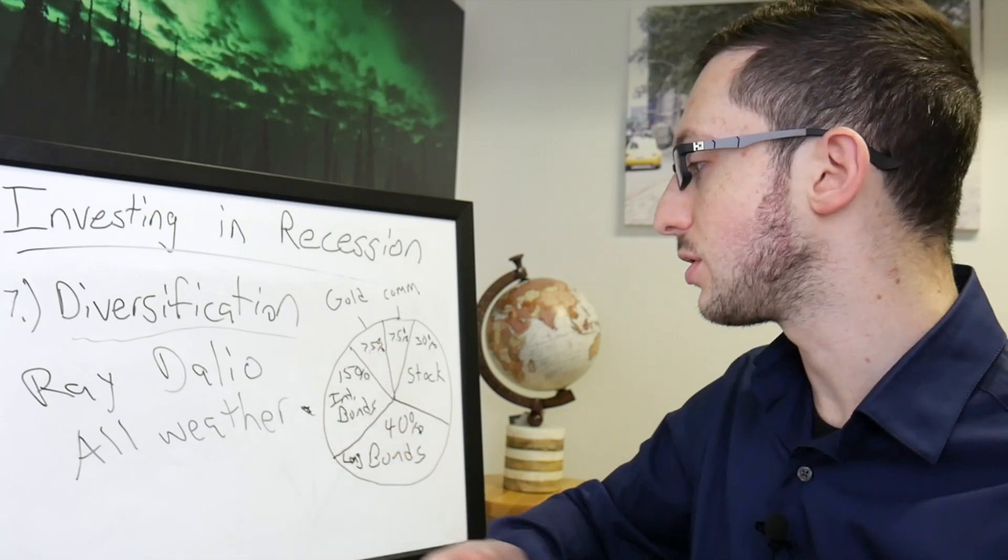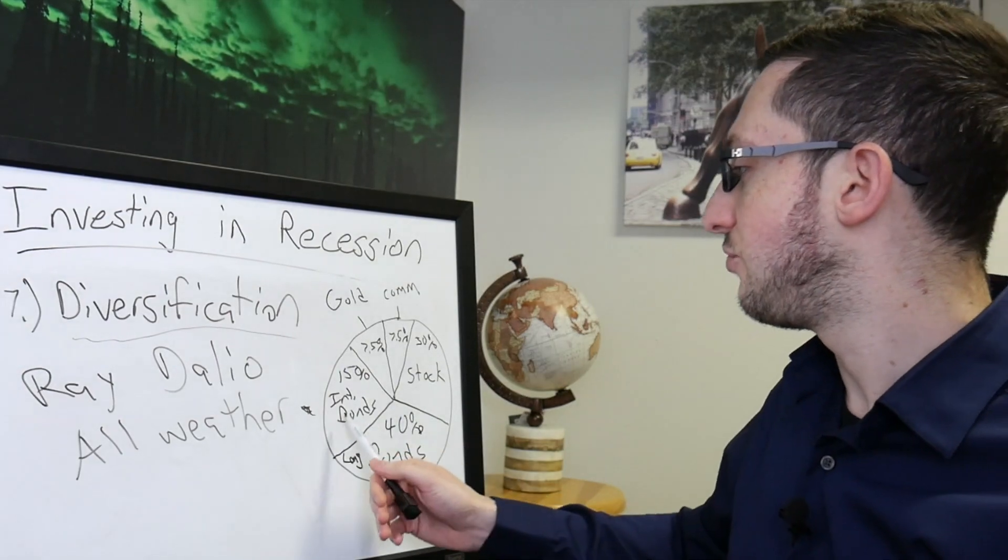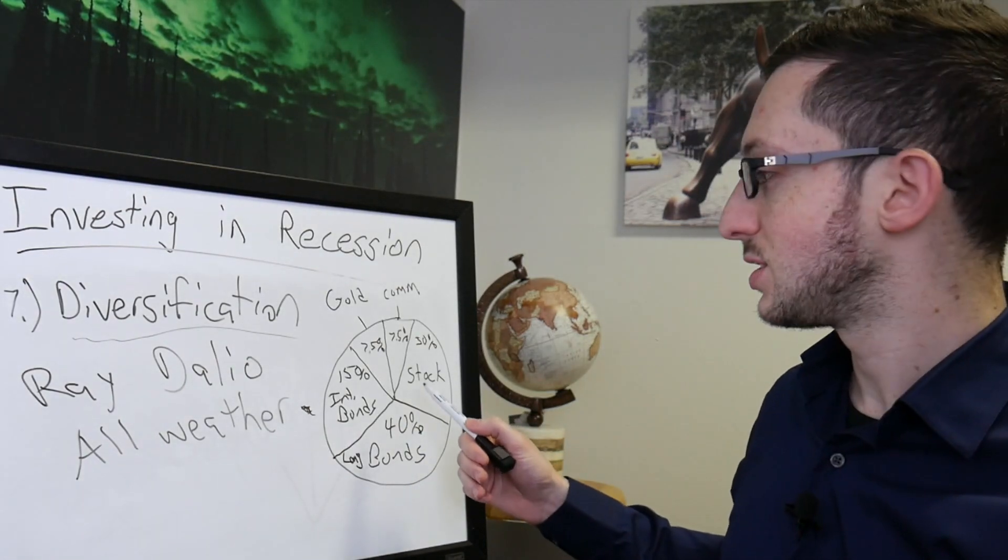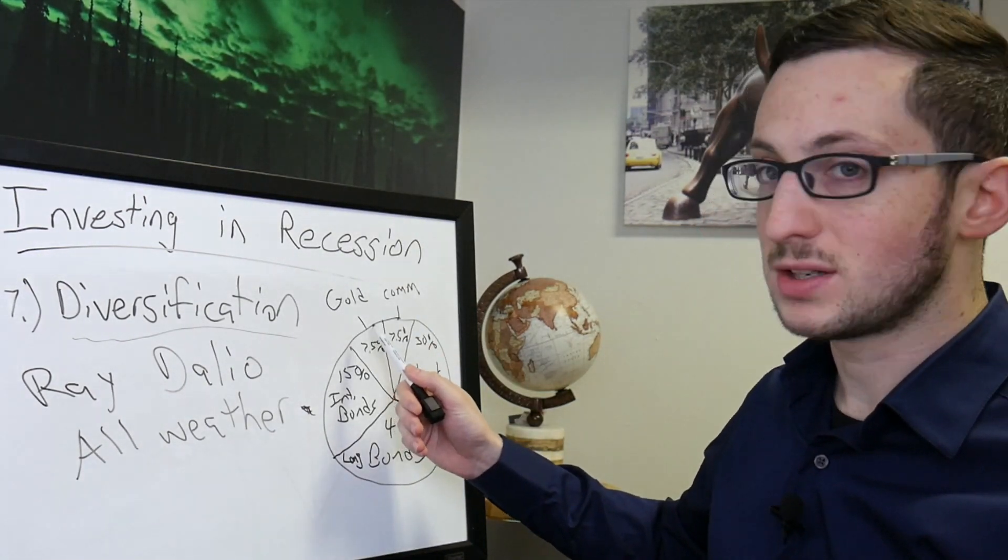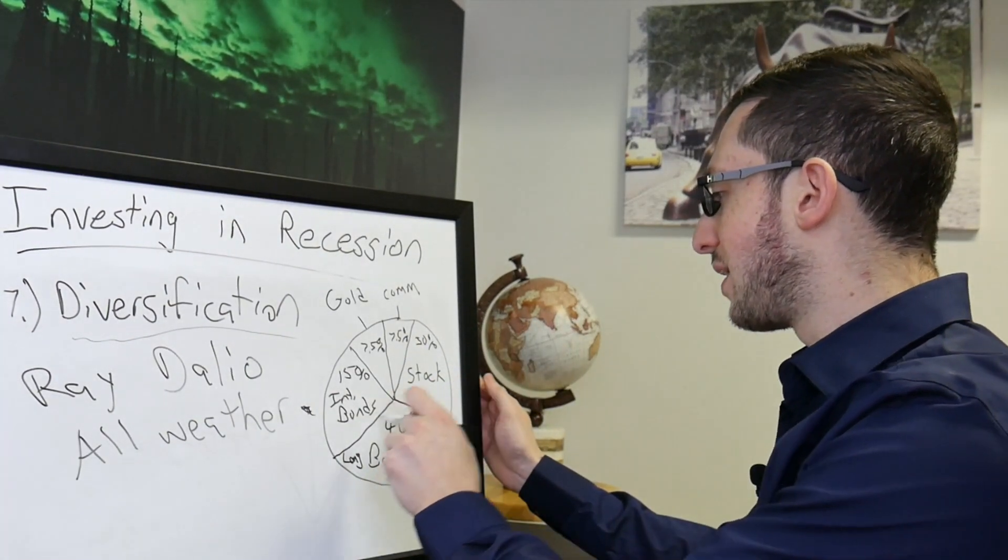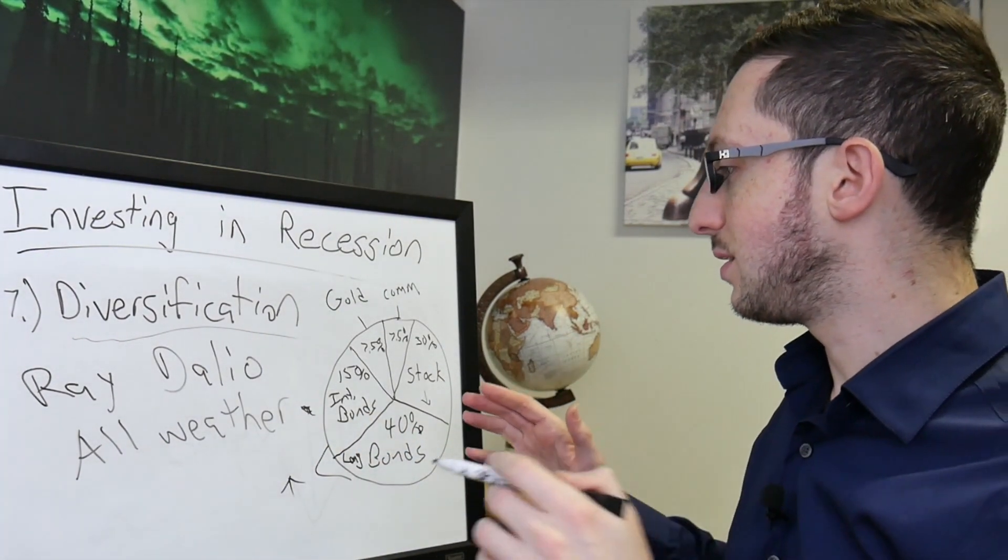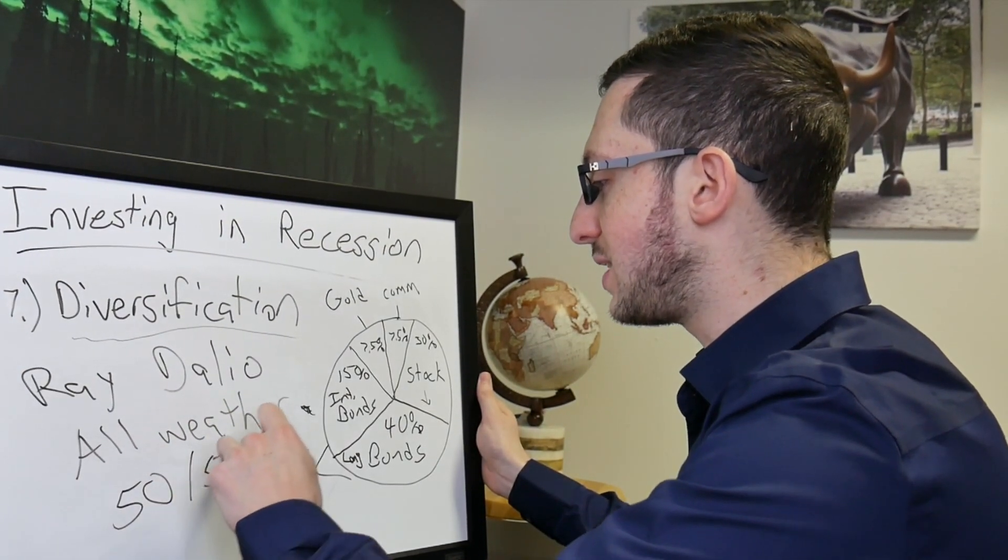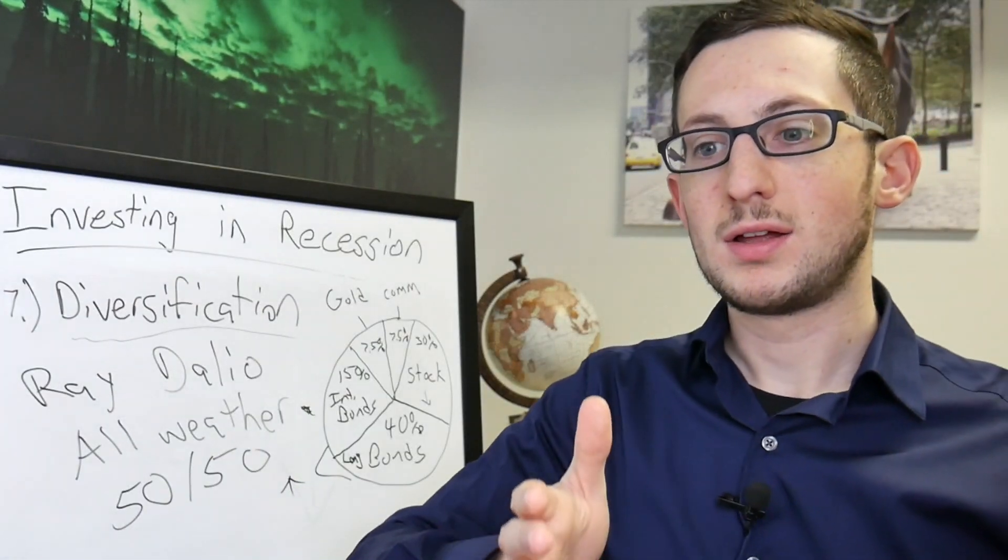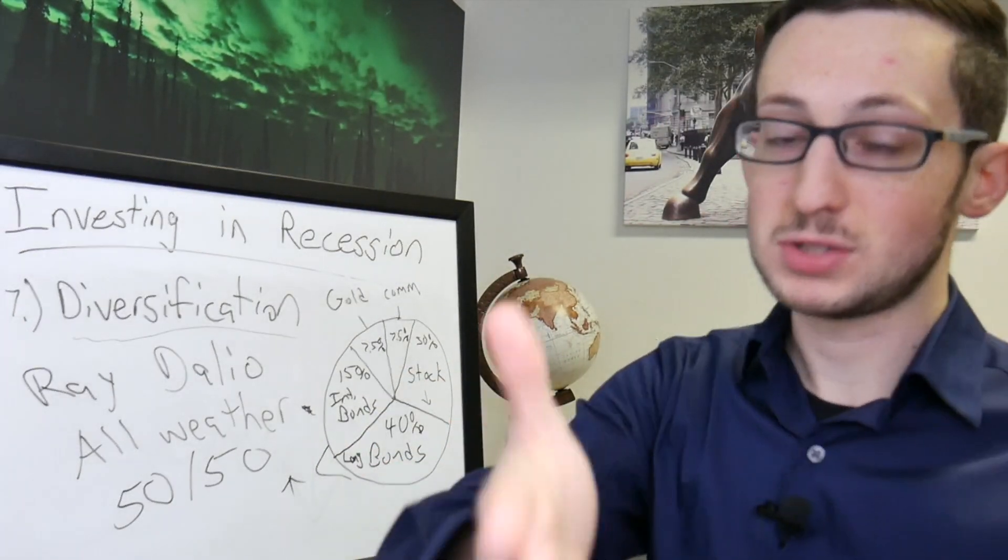He talks about 40% in long term bonds, 15% in intermediate term bonds, only 30% in stocks, and then 7.5% in gold, 7.5% in commodities. Because when stocks are down then these bonds could be up. When we're looking at a 50-50 portfolio of stocks and bonds, that's not split in half risk wise because stocks are way more risky than bonds as we're seeing now.